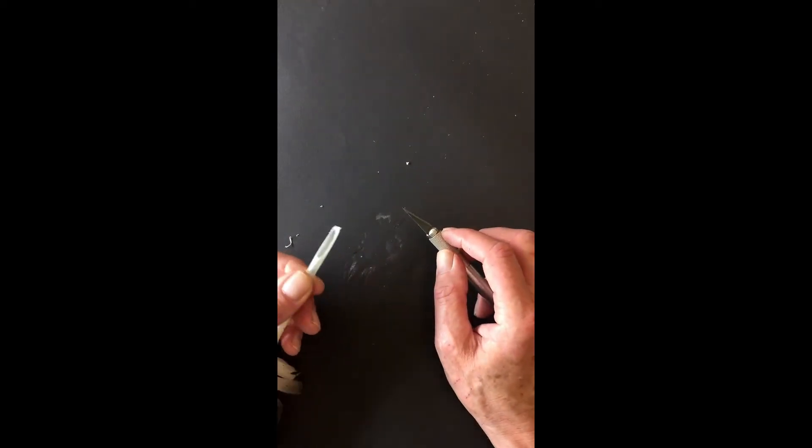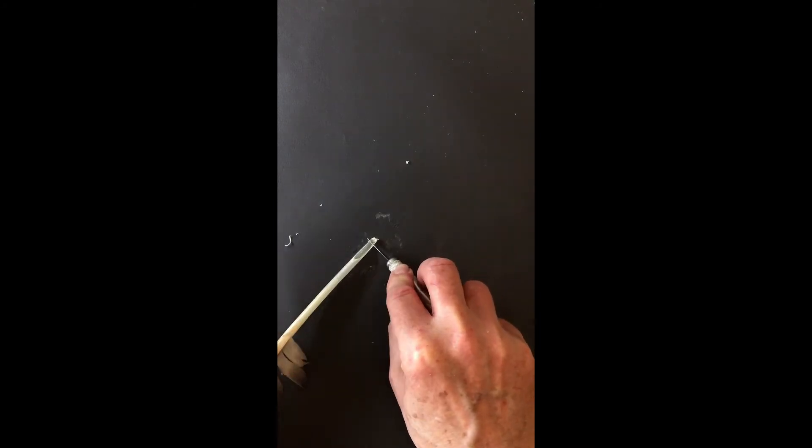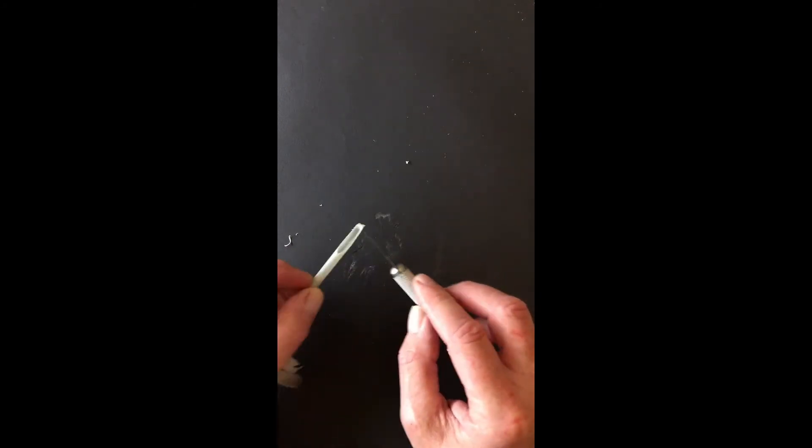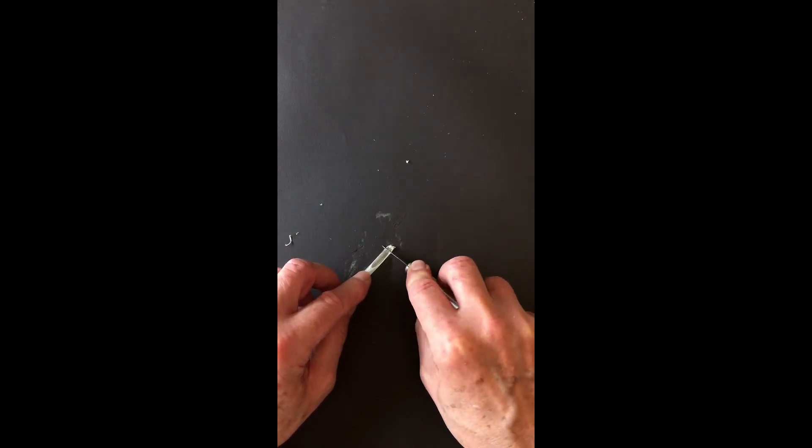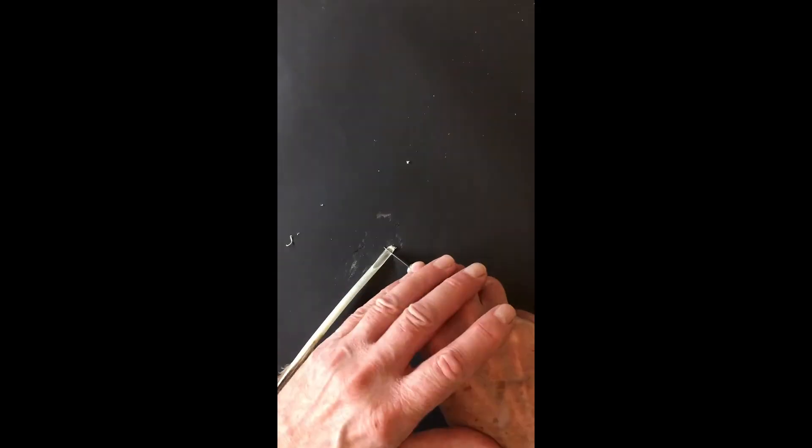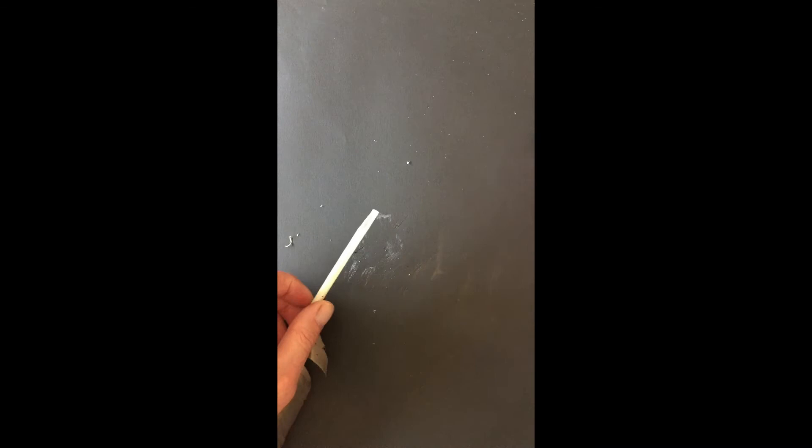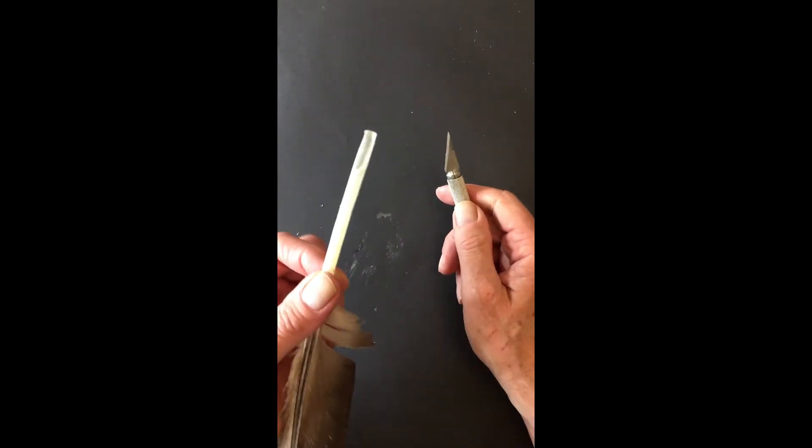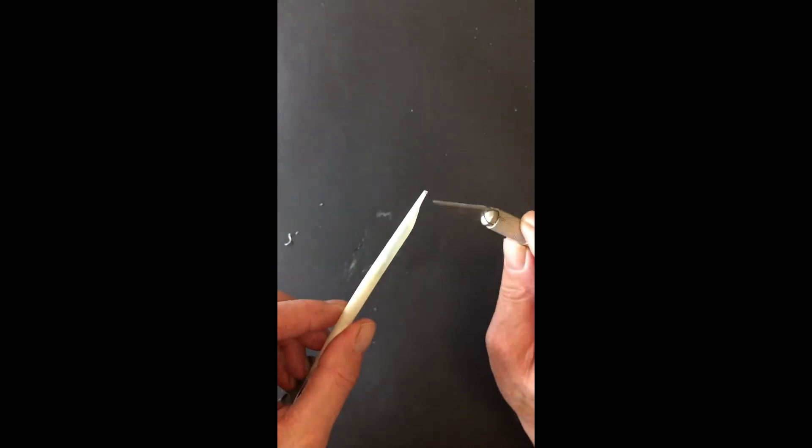So that will do for that. Next thing I need to do is square off the end, get rid of this sort of lumpy end there. So again, press on really hard. There you go, that snapped the end off. So you can see the end is nice and square now.